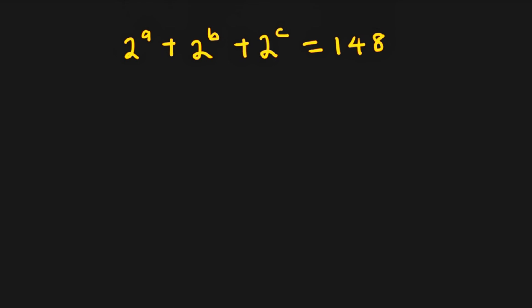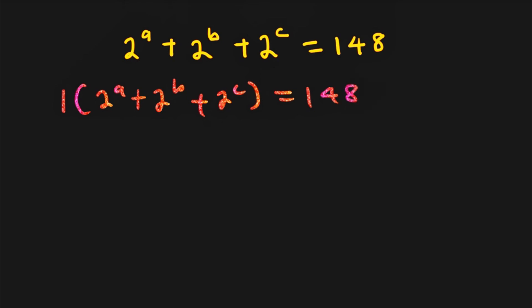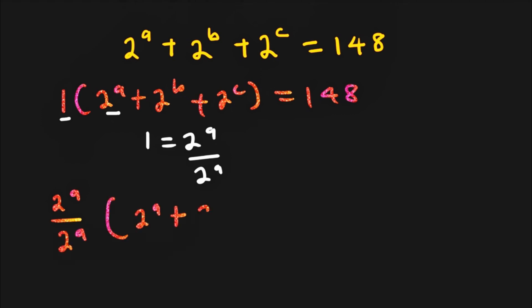The first thing is to multiply the left hand side of the equation by 1. So we have 1 into 2 raised to the power of a plus 2 raised to the power of b plus 2 raised to the power of c, and that is equal to 148. The next thing is to write 1 in terms of the first term in that sum. So we can write 1 as 2 raised to the power of a over 2 raised to the power of a.